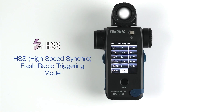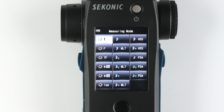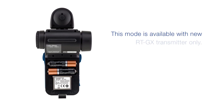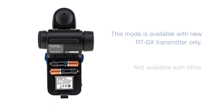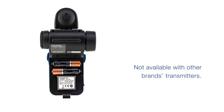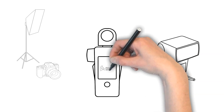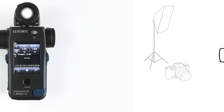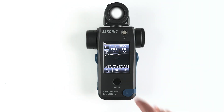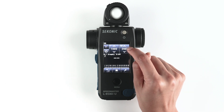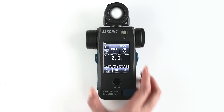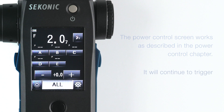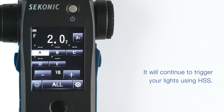Next, let's discuss HSS high-speed synchro flash radio triggering mode. This mode is available with the new RT-GX transmitter only, not available with other brands' transmitters. First, make sure that you have the HSS setting enabled on your flash and trigger if you plan to use HSS mode. Next, set your shutter speed and ISO and simply fire your flash. The meter will give you the exposure value for HSS. The power control screen works as described in the power control chapter and will continue to trigger your lights using HSS.